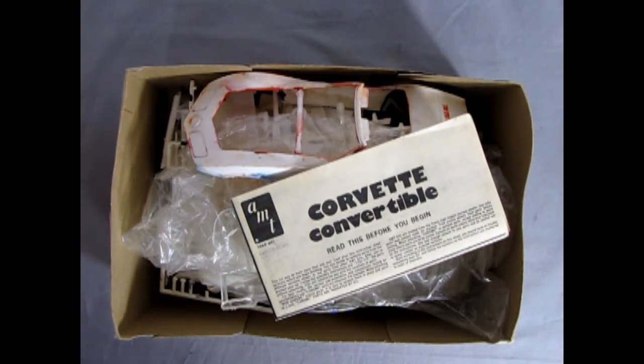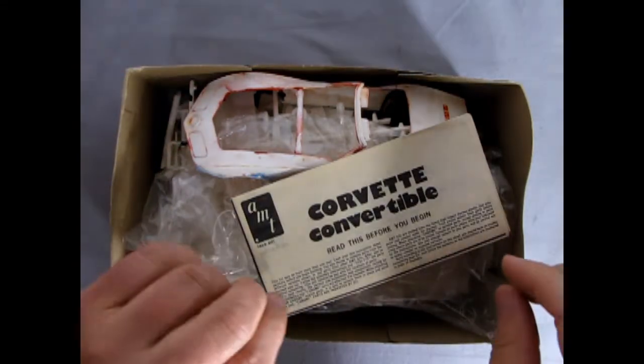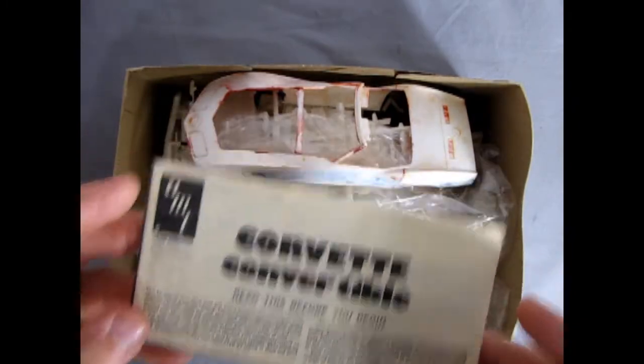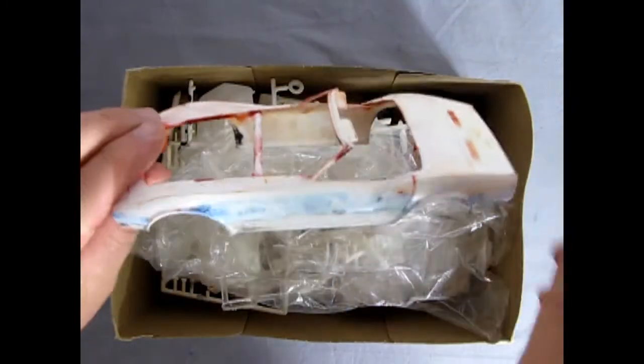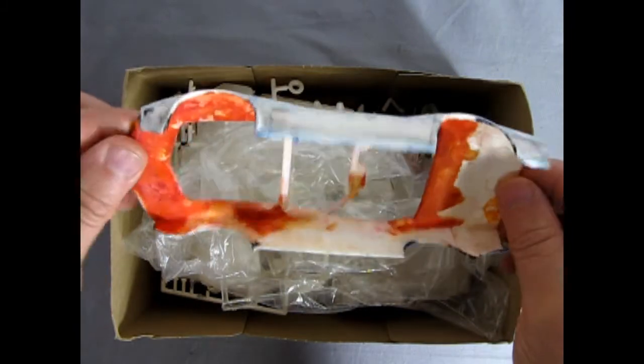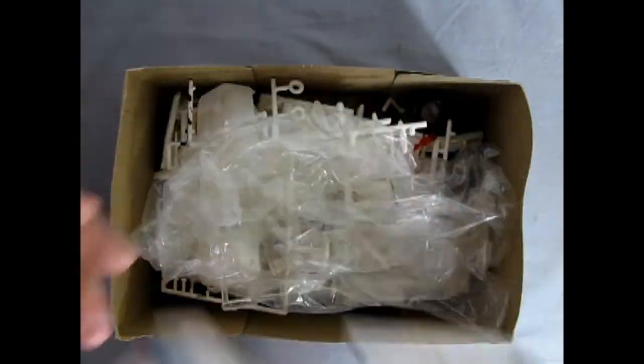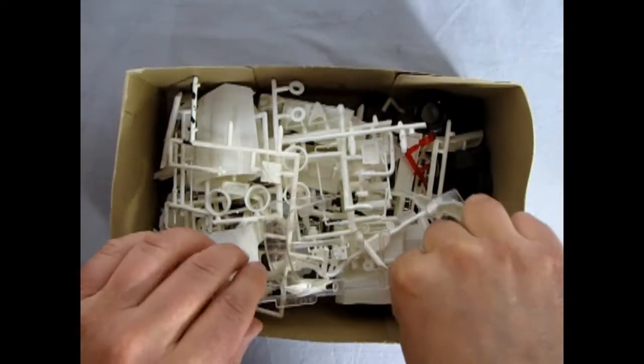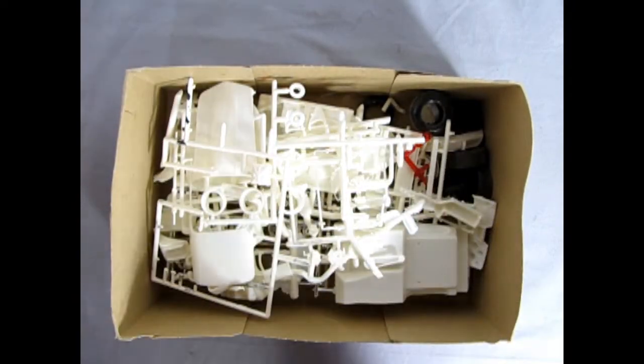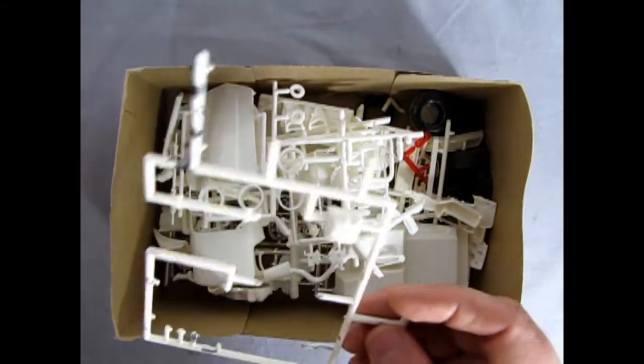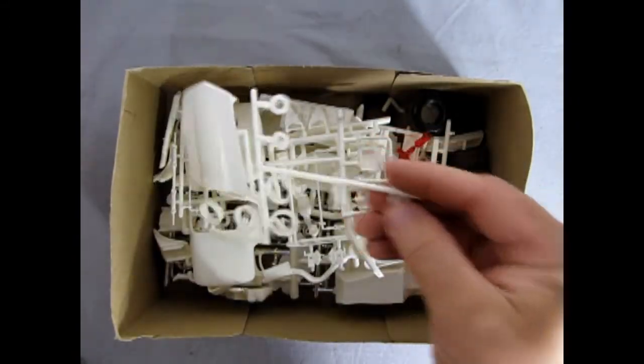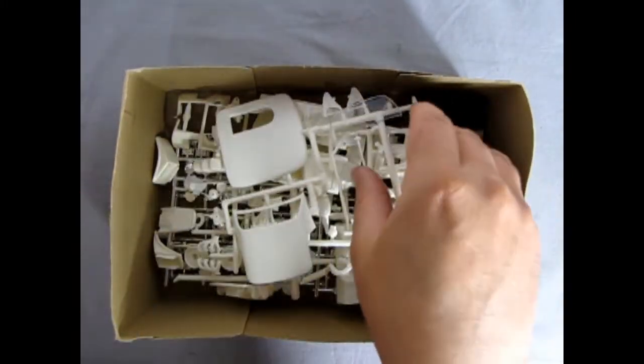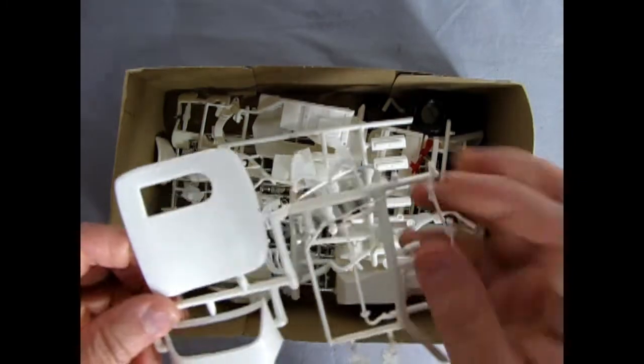Now this model kit was owned by someone else before so you can see that they tried to paint the body on this. However, here we have our instructions for our Corvette convertible. The body itself painted in a myriad of colors which was stripped off through some means. Then we have all the components. They are just sort of scattered loose in here. There's our glass windshields which look like they need a cleaning. A couple of parts here, hood and rims.